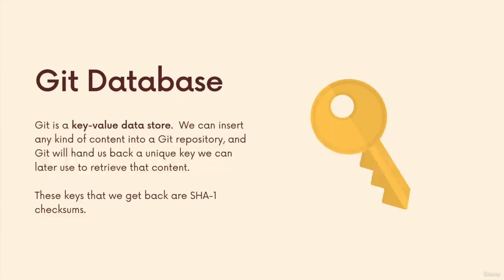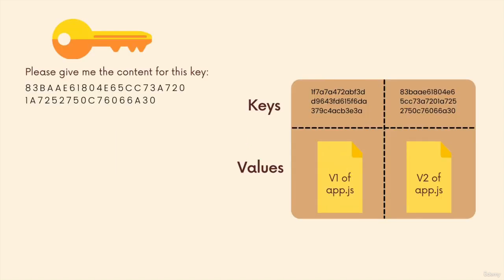To summarize: Git allows us to store any sort of data in it, and it will hand us back a key for that data. That key will be a SHA1 hash that we can then use at a later date to retrieve the information we stored. So it's a key-value data store — we store stuff in there, it gives us a key, and we can come back and give it the key to get that value. We'll see that in the next video.